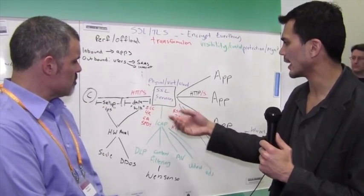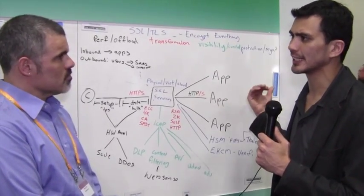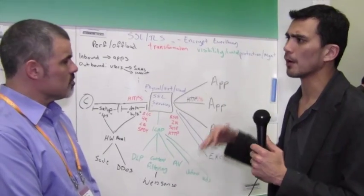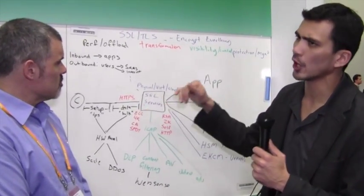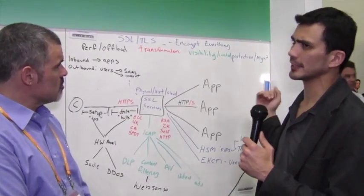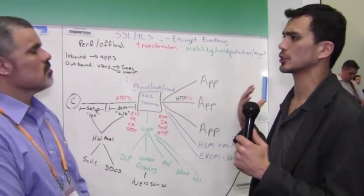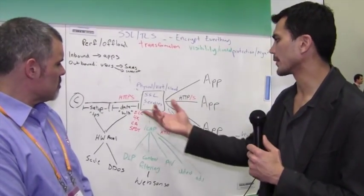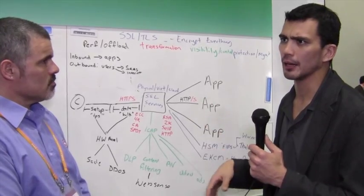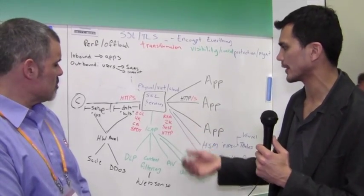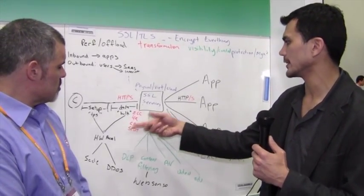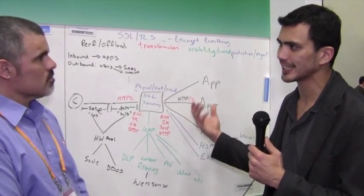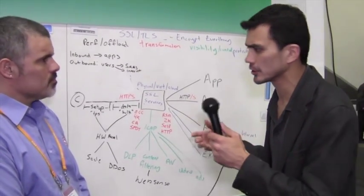Some people may want to do ECC on the outside and maybe do RSA on the inside to help do that transformation. Or maybe they want to do RSA on the outside and ECC on the inside to reduce some of that load on the servers themselves. 4K keys to 2K keys for longer key length and key strength, or certificate authorities on the outside and self-signed on the inside to help reduce those costs.